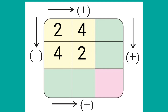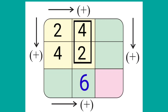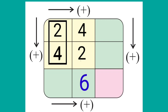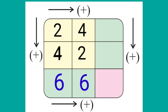First of all, we will add from top to bottom and we will start from the right side. We will add 4 plus 2 is 6. Now at the left side, 2 plus 4 is 6. After this, we will add from left to right in the first row. 2 plus 4 is 6.